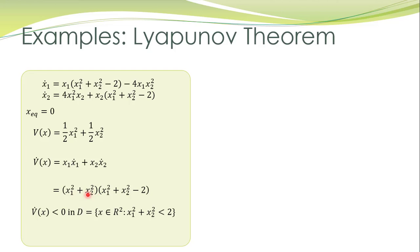This term is always positive. What about this factor? This factor is negative in this region — so V-dot will be negative definite in this domain. What is the conclusion about the stability of the equilibrium point? In this domain the equilibrium point is asymptotically stable. For all initial conditions in this domain, the trajectories will finally converge to the equilibrium point at the origin.